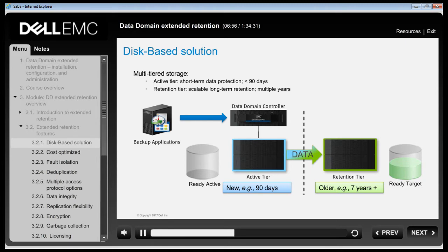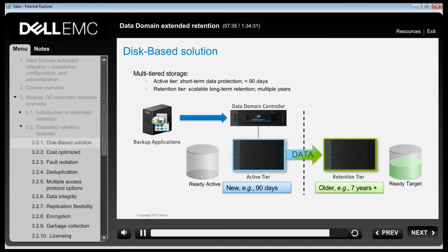The data in the form of complete files is later moved to the retention tier as specified by individual data movement policy. For example, the active tier might retain weekly full and daily incremental backups for 90 days while the retention tier might retain monthly fulls for 7 years. The retention tier is comprised of a retention unit which may draw storage from one or more shelves. From DDOS 5.5.1, only one retention unit per retention tier is allowed.